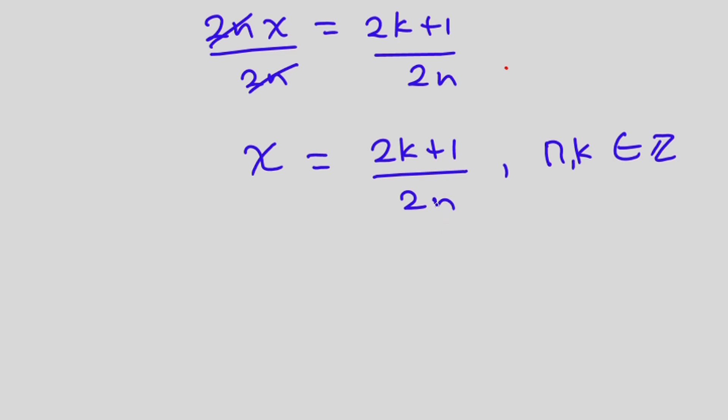Now let's go ahead and choose any number for k and n but since n is a denominator we don't want n to be equal to 0. So from here we have to assume that k is equal to 0 and n is equal to 1.